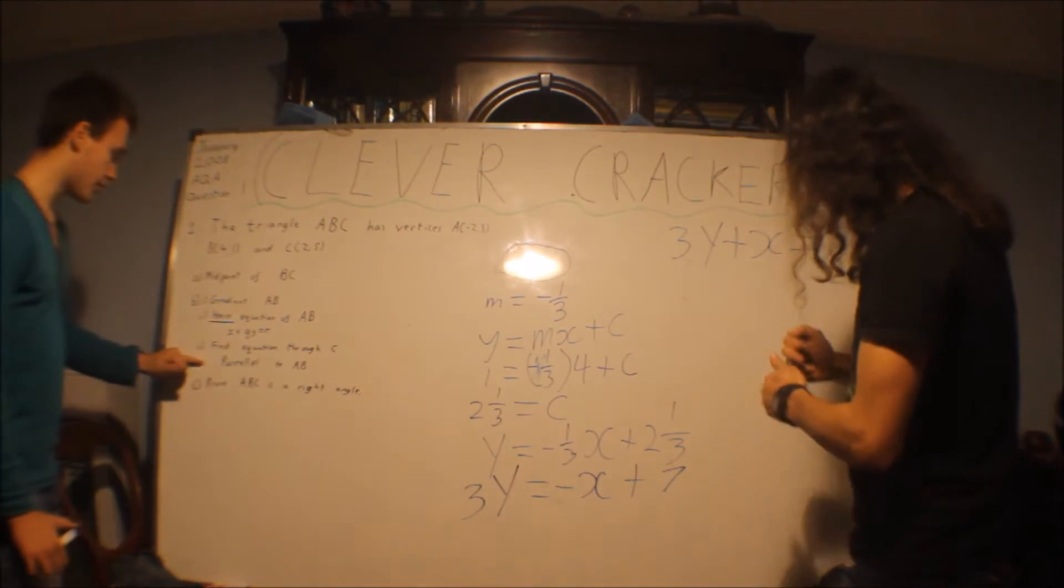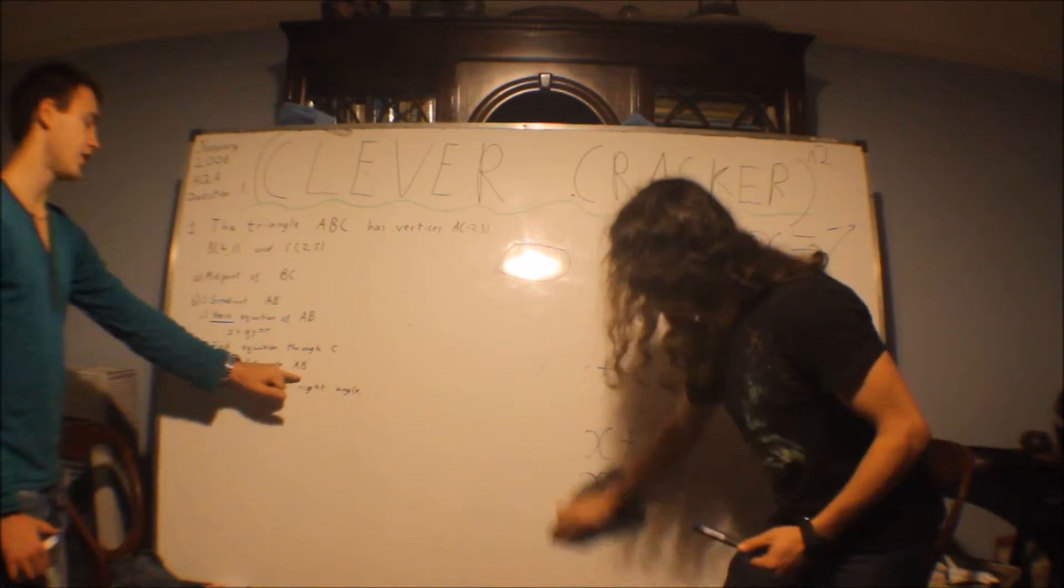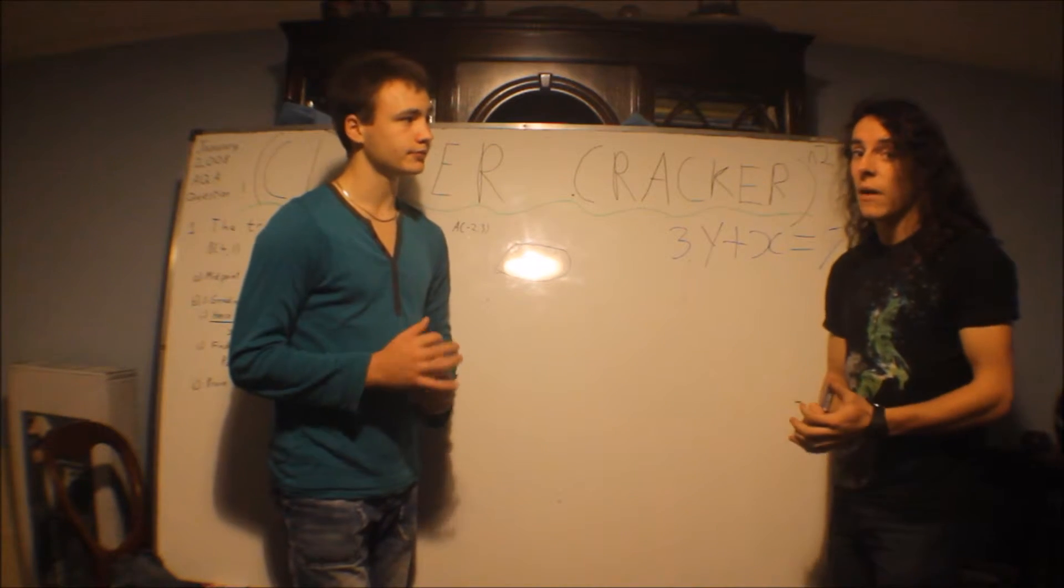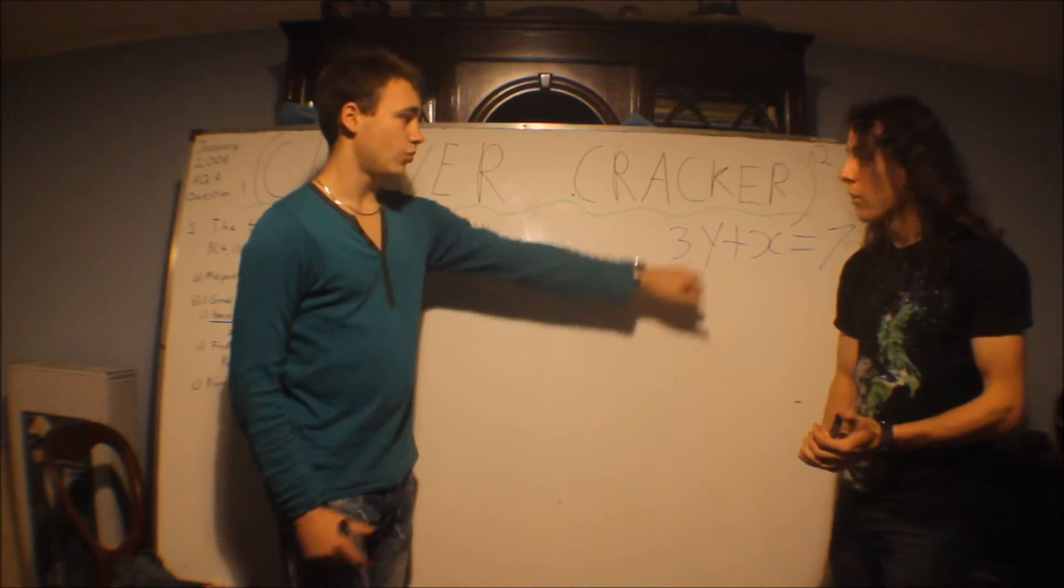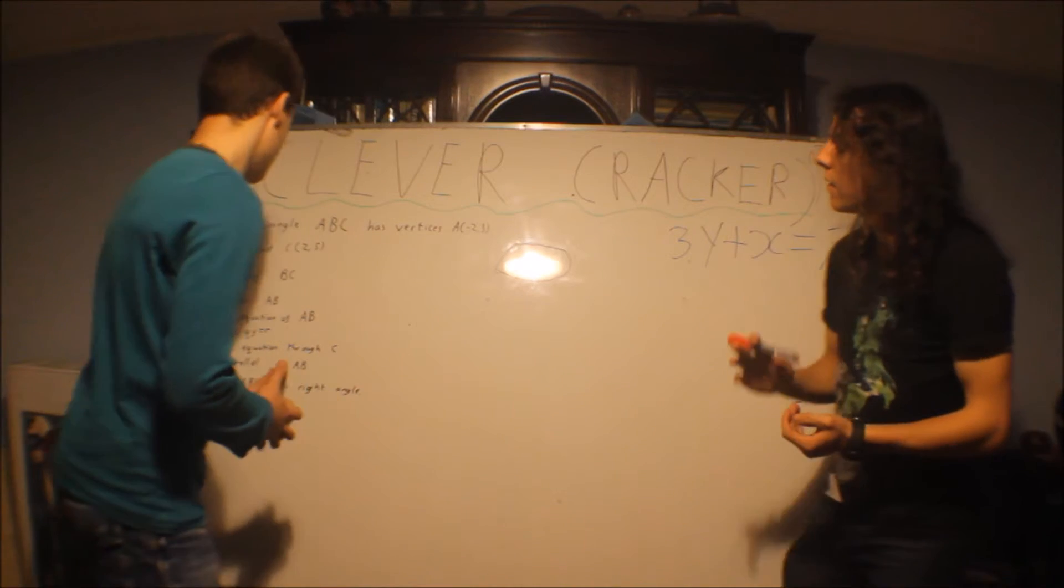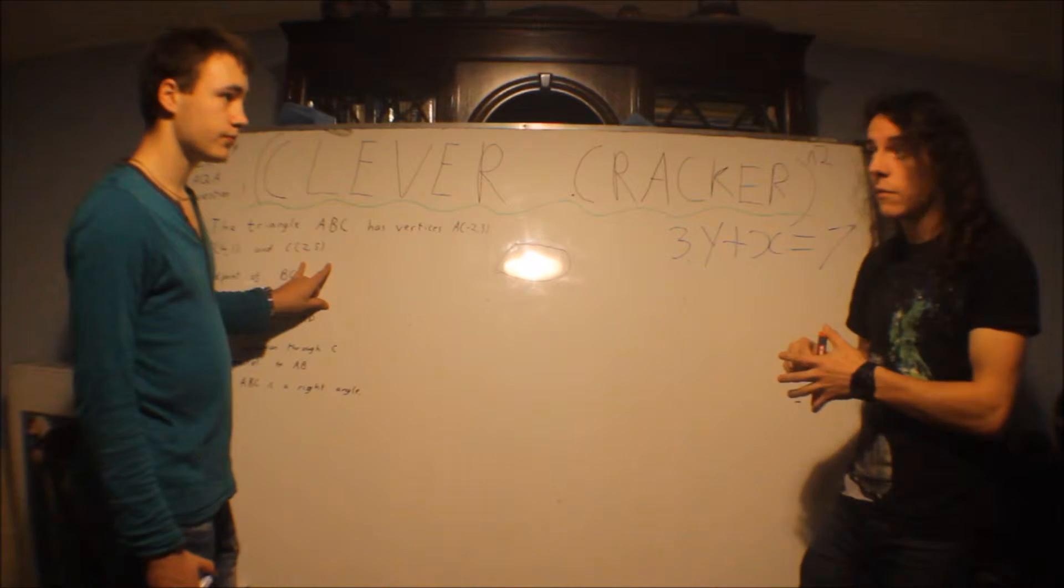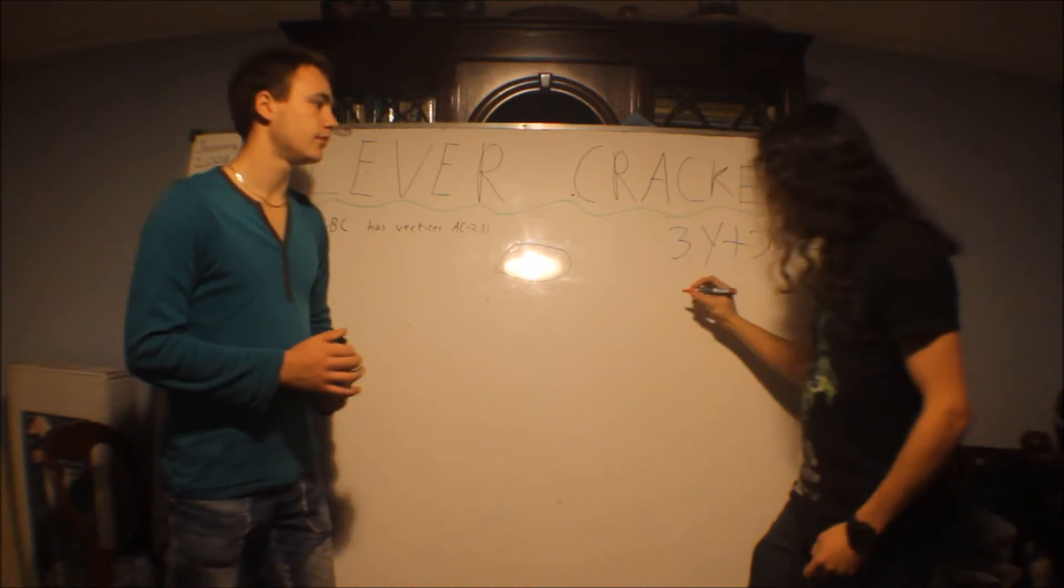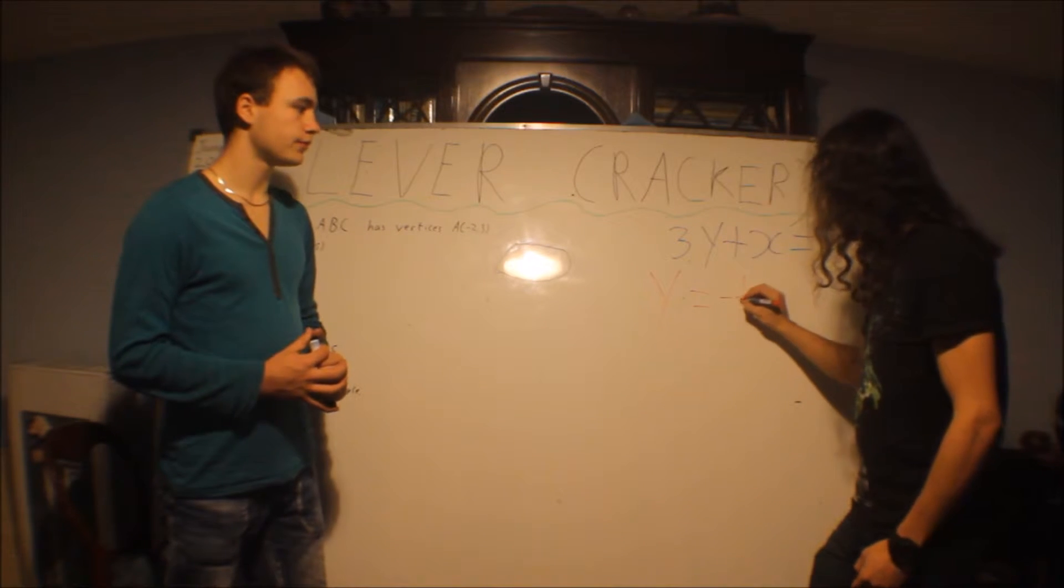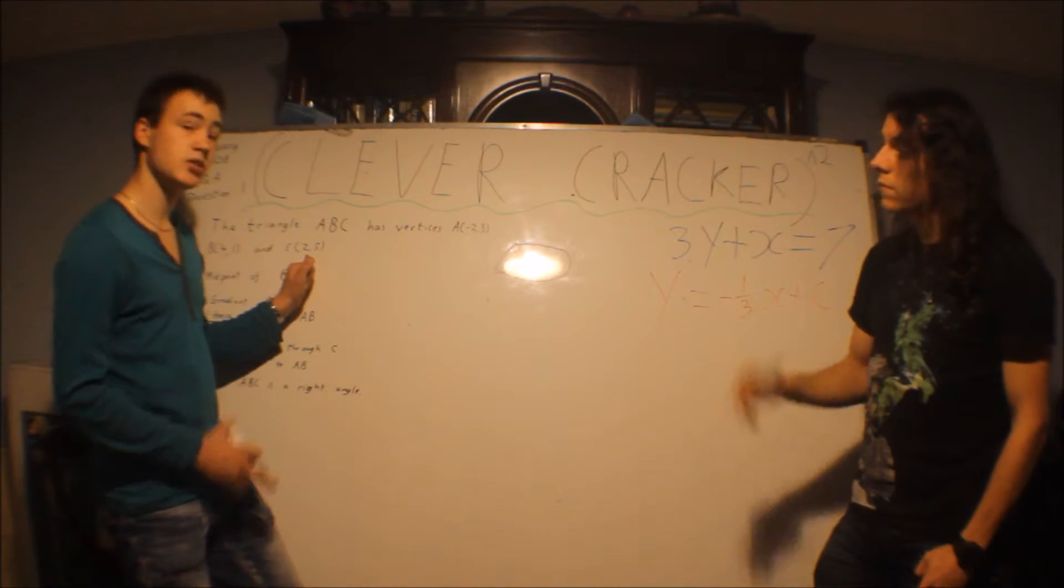Part three says find an equation through C, which is here, parallel to AB. There's a hint in that question, and that's the word parallel. Parallel means the same gradient. So we have a gradient. We had it back here, it was minus a third. And it's going through C this time. So that's the point you put into your Y equals MX plus C equation. So Y equals MX plus C equals minus a third X plus C. Again, we don't have the C, and it's this one to put in.